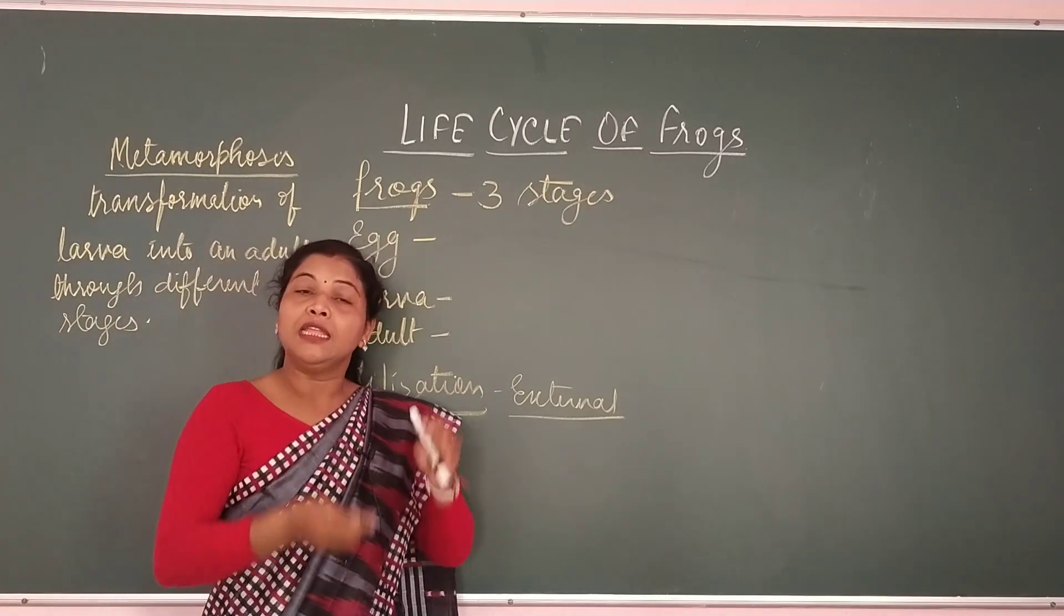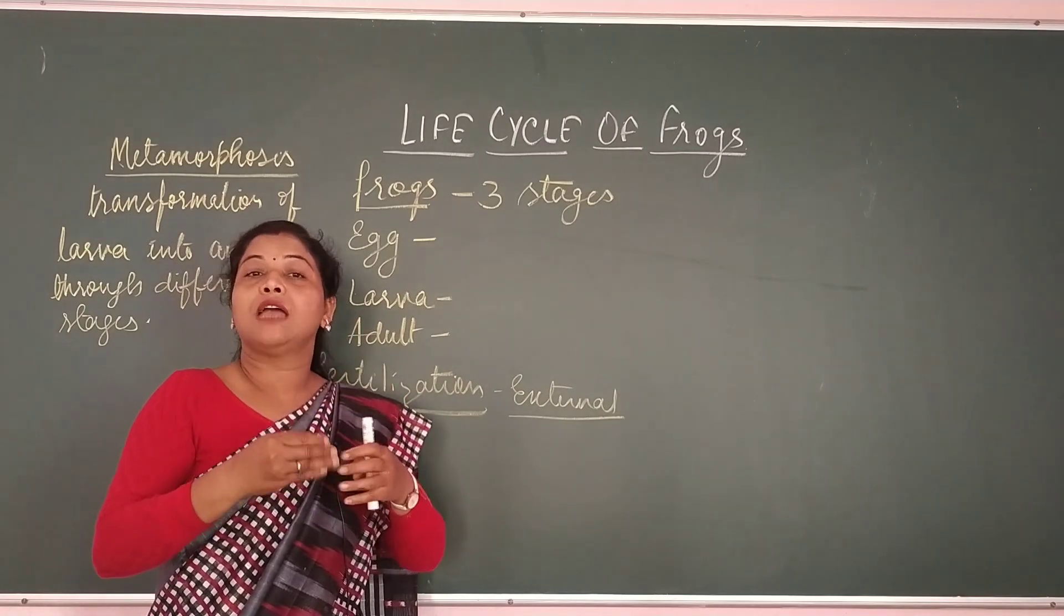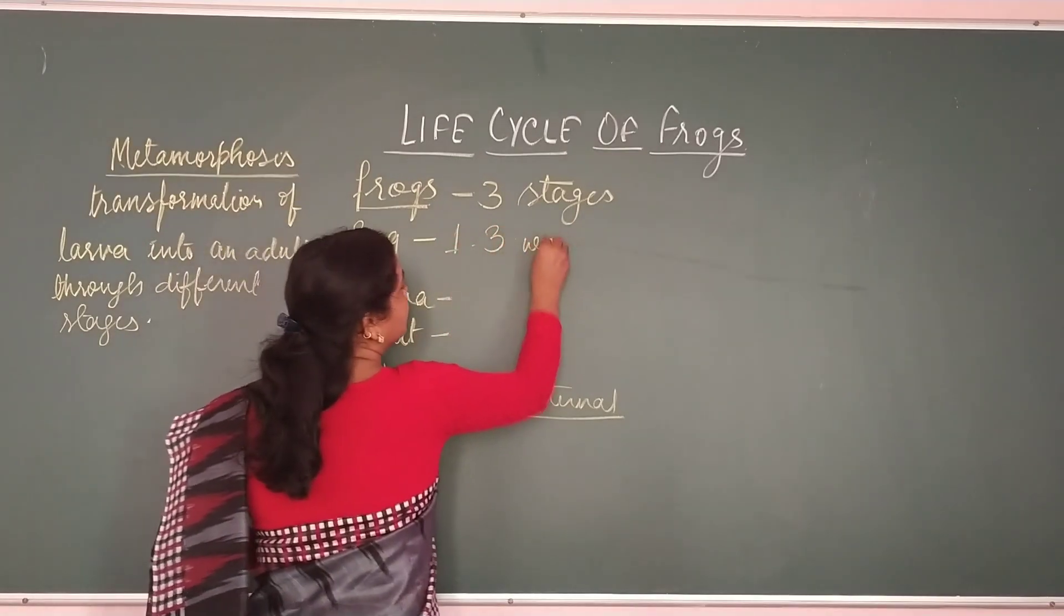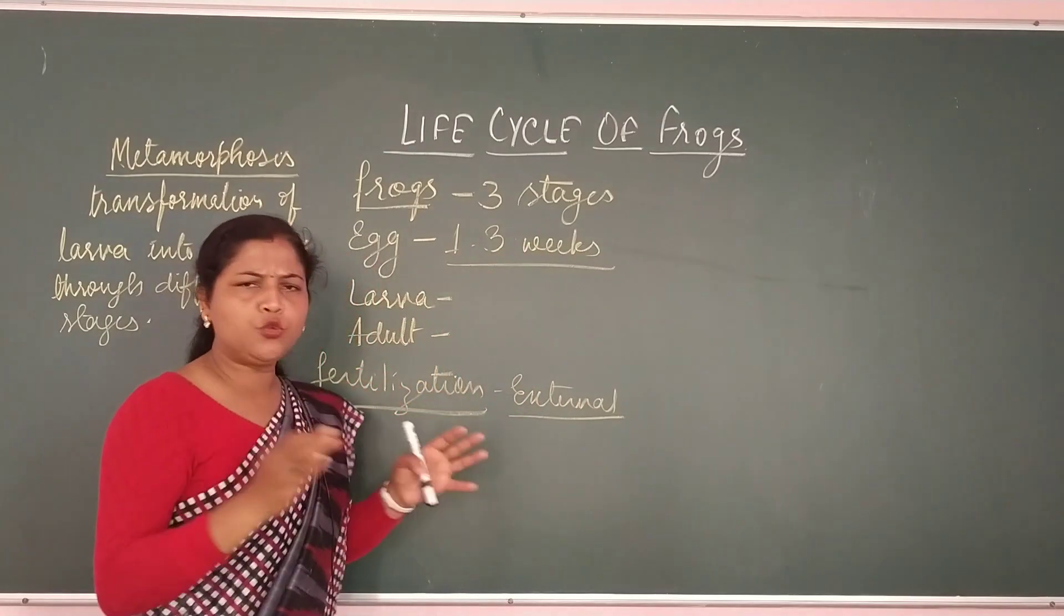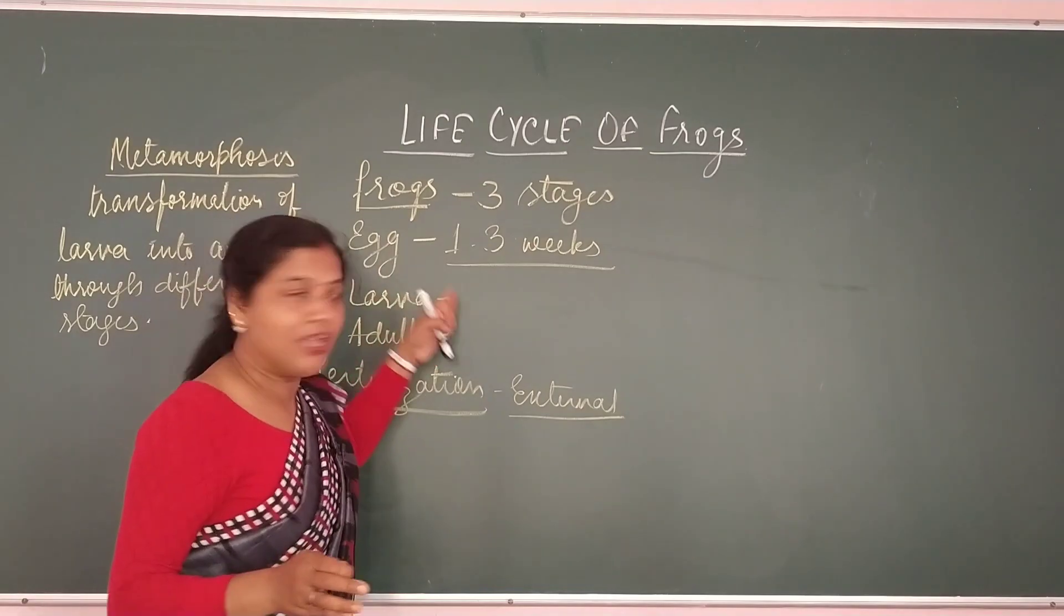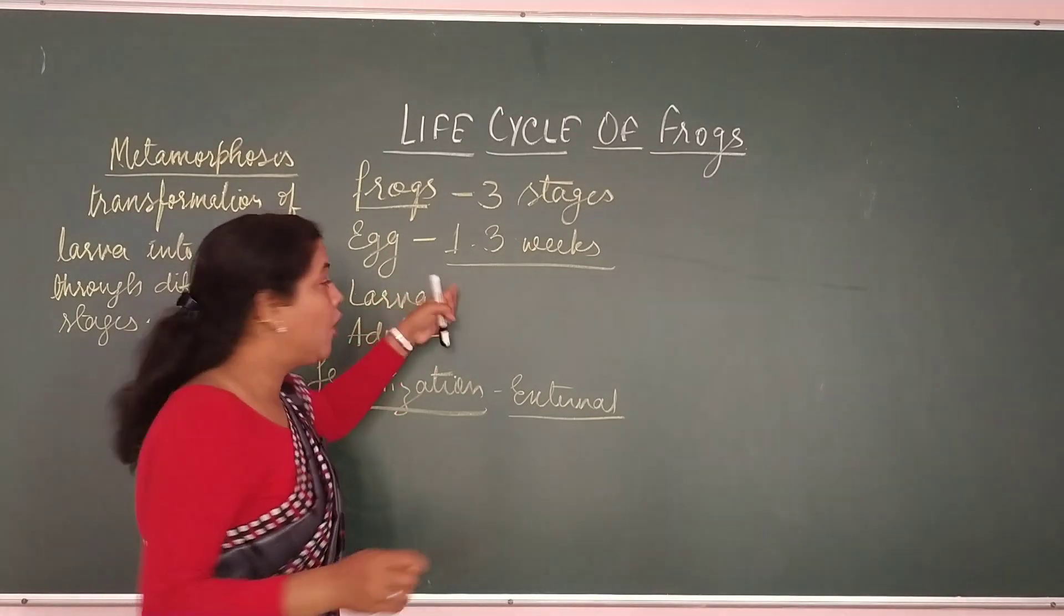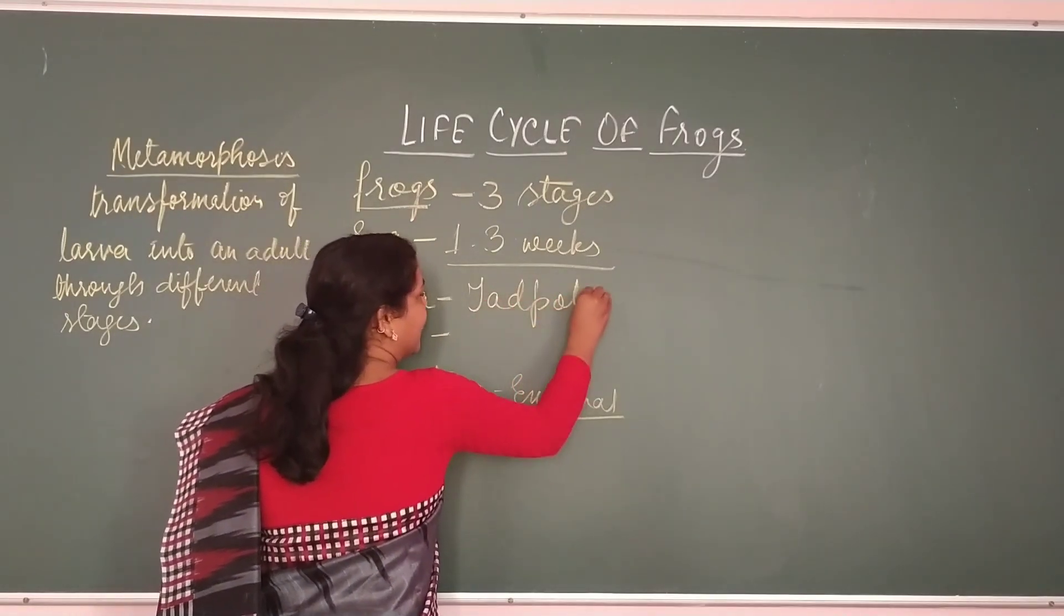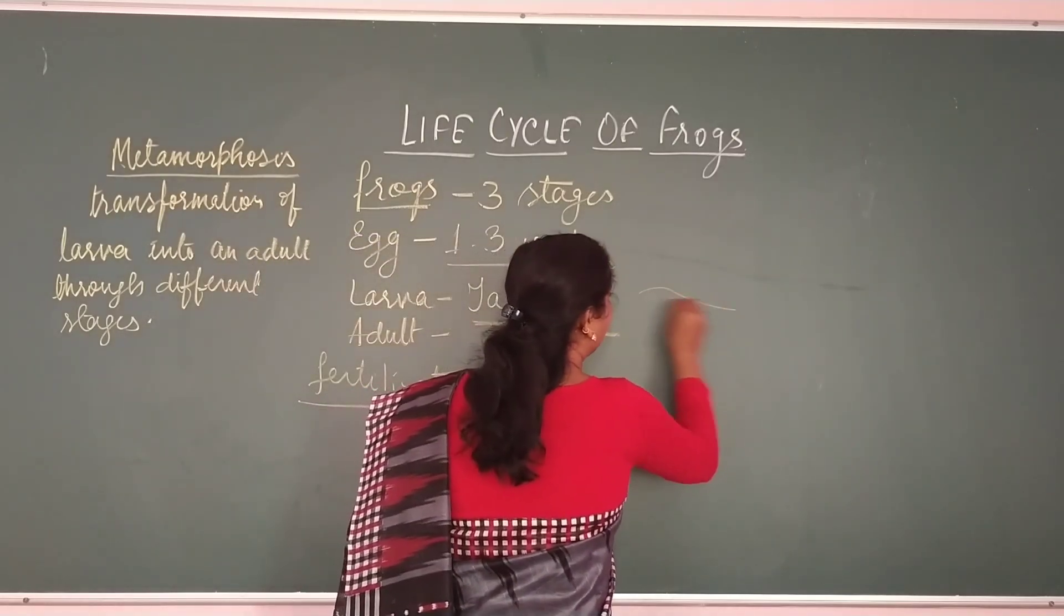Then what happens? Then this fertilized eggs start hatching after one to three weeks. Or between one to three weeks, they start hatching out. And what comes out? Larva comes out. And this larva is called tadpole.